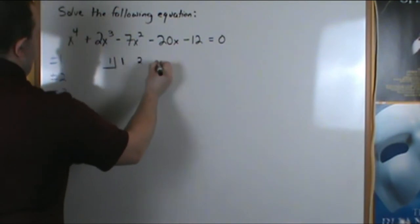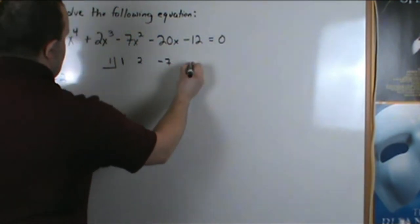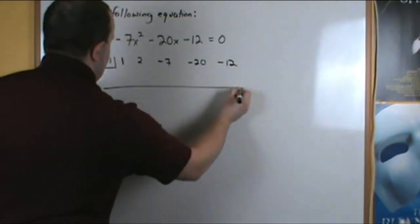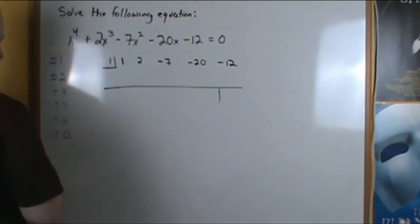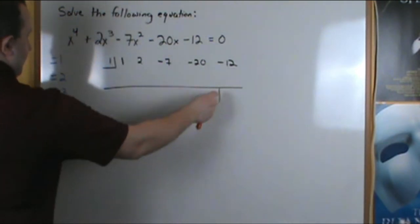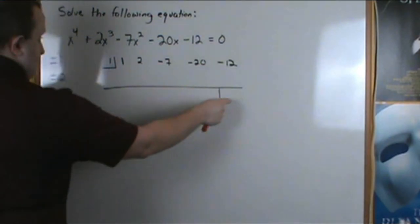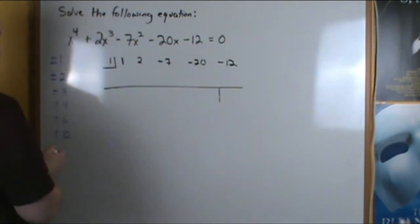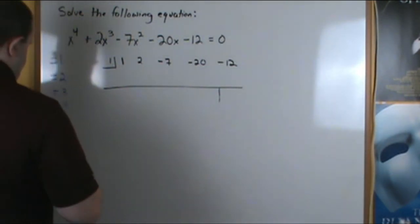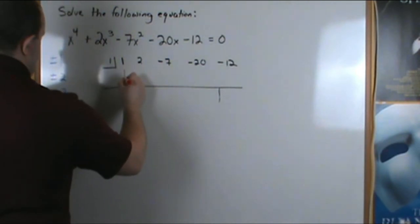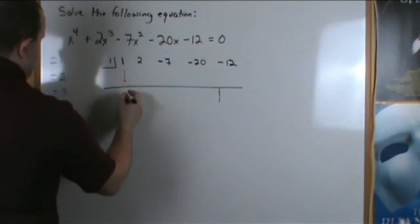Remember, 1, 2, negative 7, negative 20, negative 12. Remember, if 1 is the solution, if x equals 1 is the solution, our remainder here should be 0. So to start off, like we always do with synthetic division, bring down a 1, we get a 1.